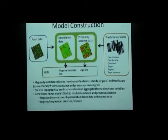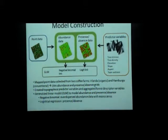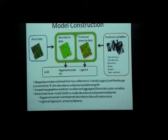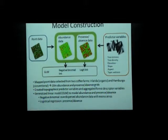From this, I made two different models using a GLM — generalized linear model — to model either the abundance or the presence-absence. For the presence-absence model, I used logistic regression for the link function. For the abundance model, I used a negative binomial regression, which is good for describing over-dispersed abundance data with excess zeros — meaning there were a lot of trees with no ants in them.